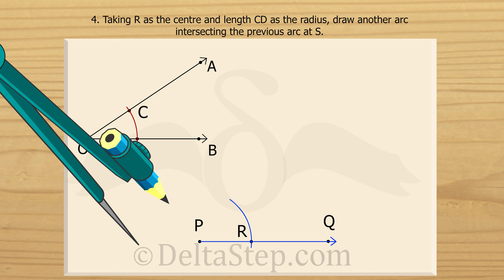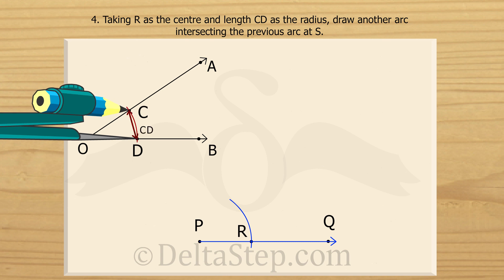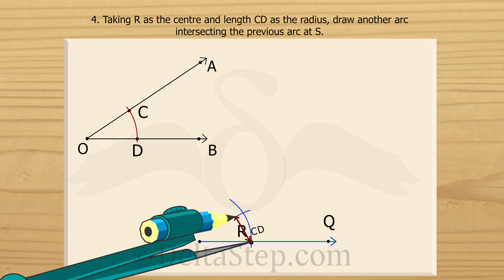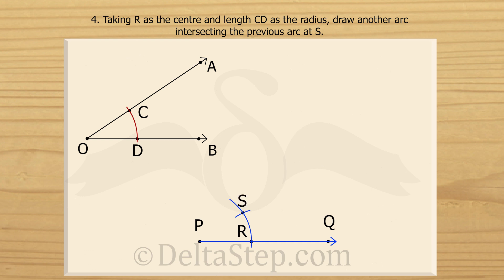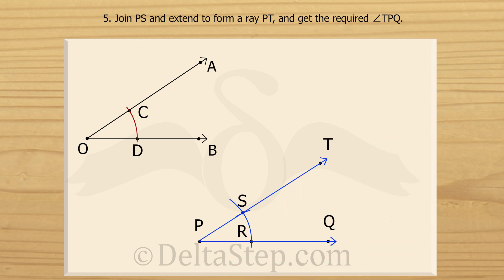Then we measure the length of segment CD with the compass. We place the pointed end of the compass at D and adjust the other arm so the tip of the pencil coincides with C. Then with R as the centre and radius equal to the length of segment CD, we draw an arc to meet the second arc at a point we call S. Finally we join PS and extend it to form a ray PT.